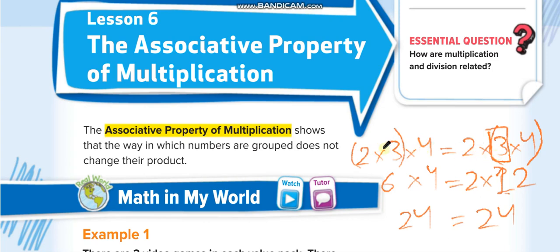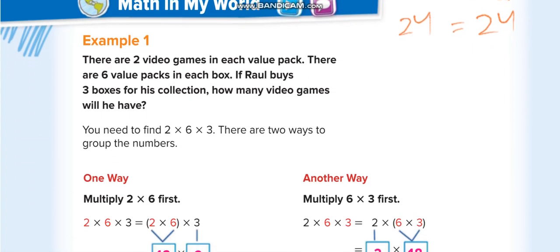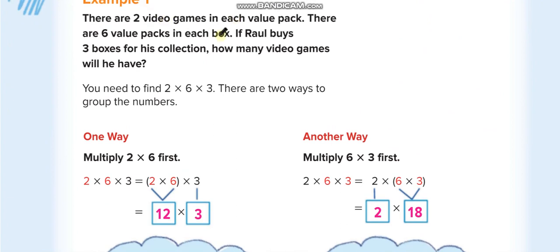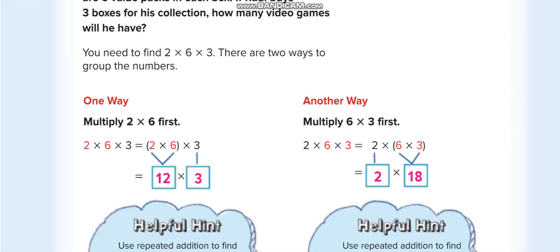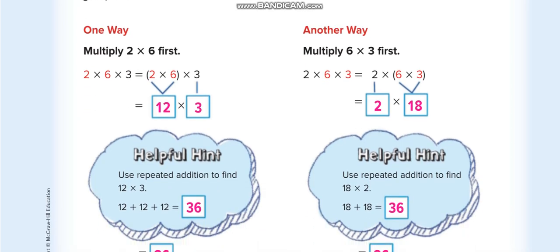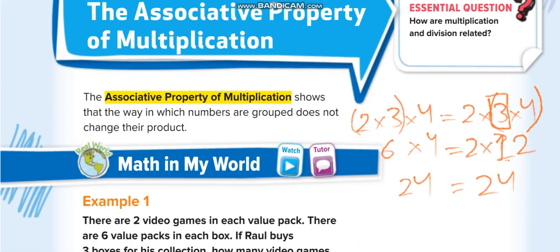Normally we use the associative property to solve questions easily — first we create a group, solve that one, then multiply by the other number. For example: there are two video games in each pack, six packs in each box, and Raul buys three boxes, so two times six times three. Grouping two and six: two times six is twelve, times three equals thirty-six. Grouping six and three: six times three is eighteen, times two equals thirty-six. Both ways give the same answer.